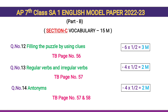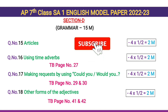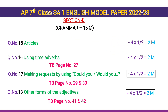Question number 13 — regular verbs and irregular verbs — 4 words, 4 × ½ = 2 marks. Textbook page number 57. Question number 14 — antonyms — 4 words, 4 × ½ = 2 marks. Textbook page number 57, 58. Section D — Grammar, 15 marks. Question number 15 — articles — 4 questions, 4 × ½ = 2 marks. Question number 16 — using time adverbs — 4 questions, 4 × ½ = 2 marks. Textbook page number 27. Question number 17 — making requests using 'Could you?' or 'Would you mind?' — 4 questions, 4 × ½ = 2 marks. Textbook page number 29, 30.